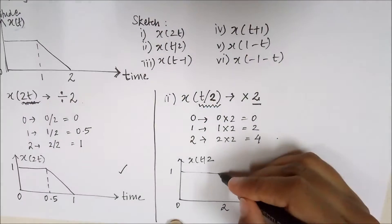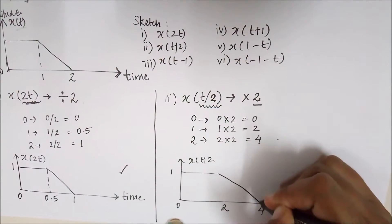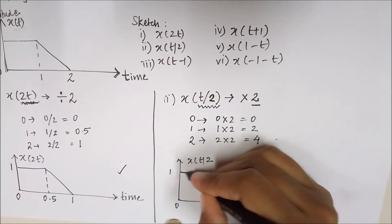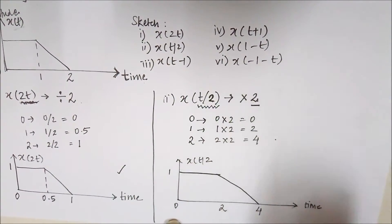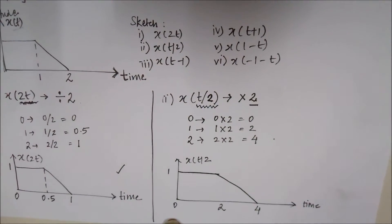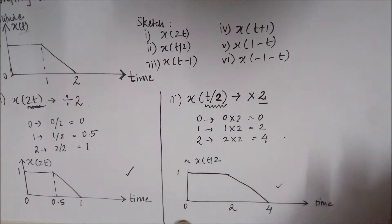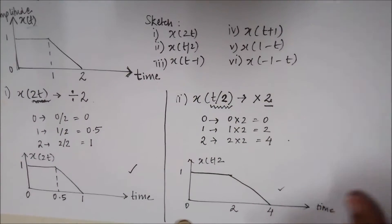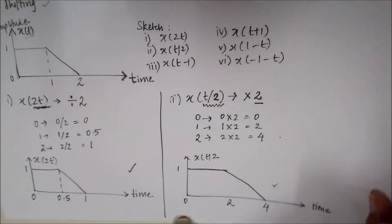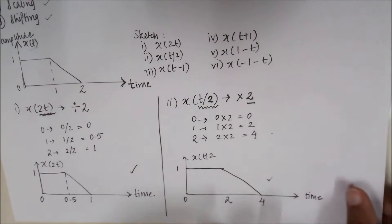Here you can see our signal has expanded because we have multiplied it by 2. This is the final signal for part two. Let's solve the third part.